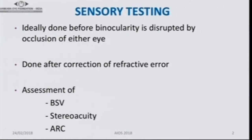There are two parts: sensory evaluation and motor evaluation in a squint patient. Sensory testing is ideally done before binocularity is disrupted by occlusion of either eye, as you tend to get false readings otherwise. It is done after correction of any refractive error. The third thing is assessing binocular single vision, stereo acuity, and anomalous retinal correspondence.